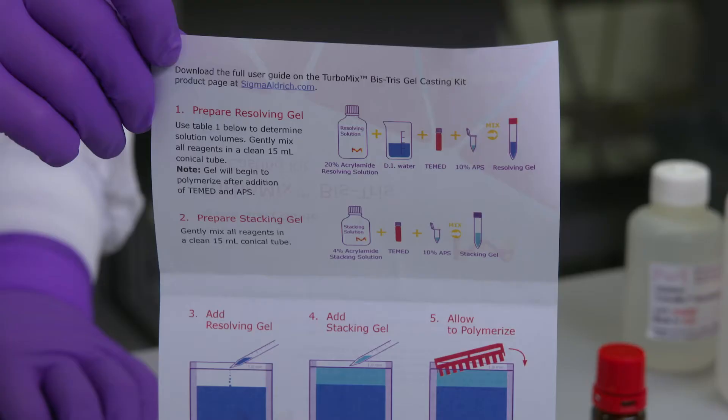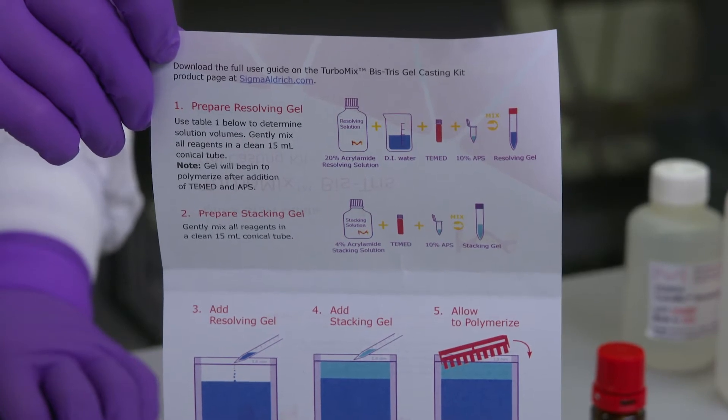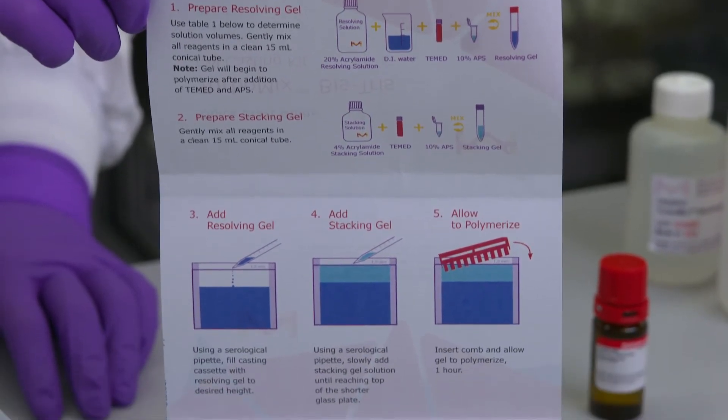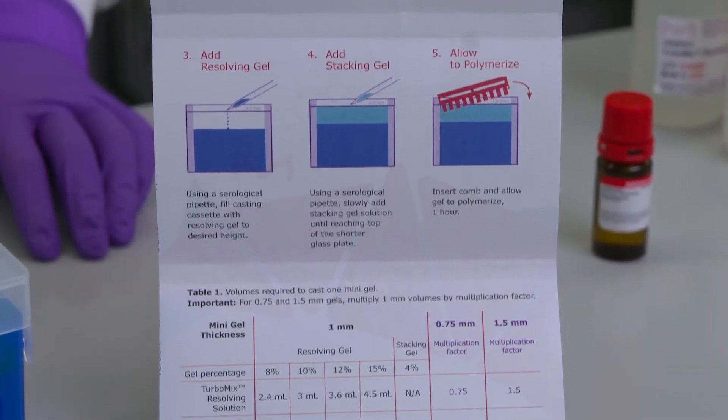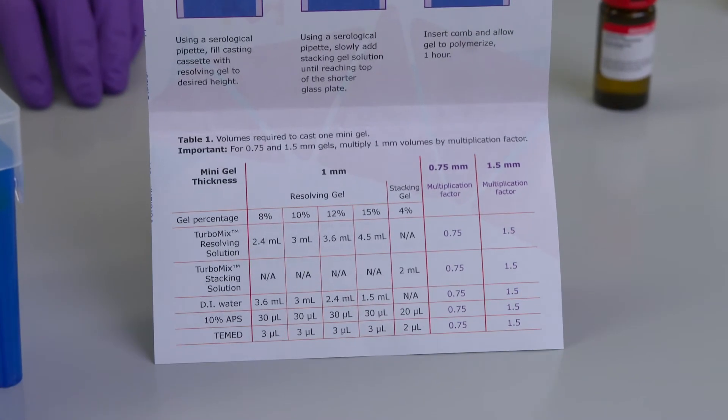Now, I'll mix my resolving and stacking gels. You can use the tables in the user guide to calculate how much resolving and stacking solution you'll need. For this size cassette, we'll need 6 milliliters of resolving solution and 2 milliliters of stacking solution.